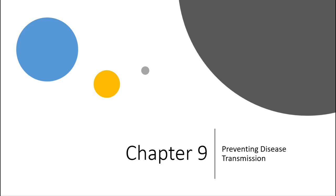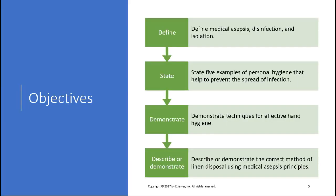This chapter we're going to be covering is Preventing Disease Transmission — it's chapter 9 in your book. Looking at the objectives here: define, state, demonstrate. When we're in lab, you're actually going to be demonstrating some of these things, which is a lot of fun.